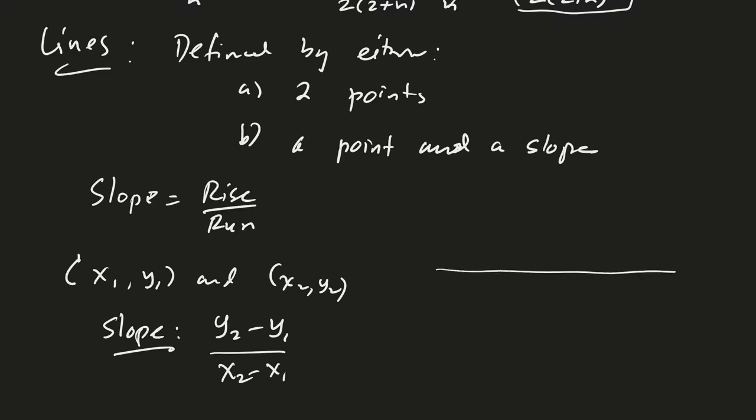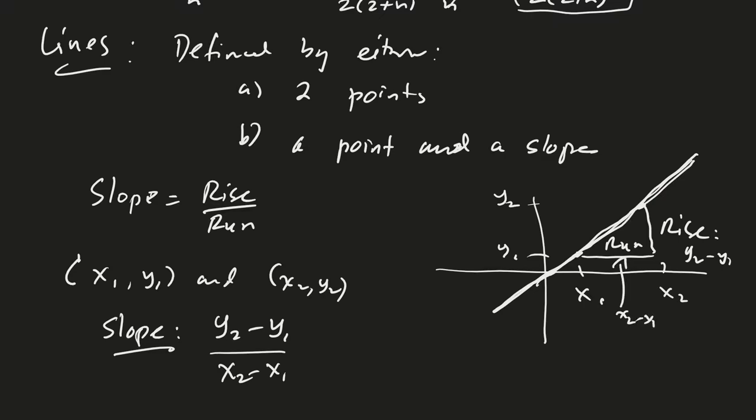So, maybe I should draw a little picture off to the side. So this might be my first point. This would be my second point. x1, x2, y1, y2. And so what I'm looking for, this is my line here. I may not go through the origin, right? But that's my line, and my slope is going to be rise over run. And so the rise, then, is the change in y, y2 minus y1. And the run is x2 minus x1.